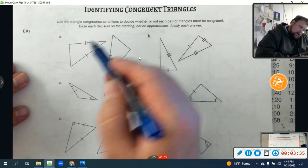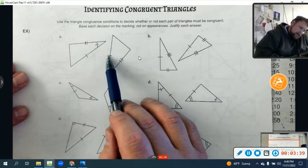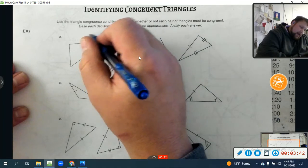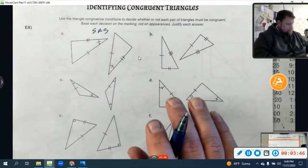So, what do I know? I see this is sides and the included angle, which would be side, angle, side congruency right there.